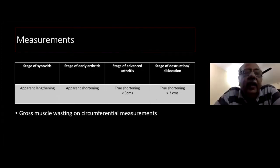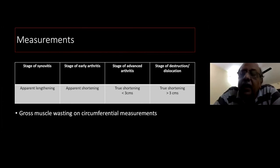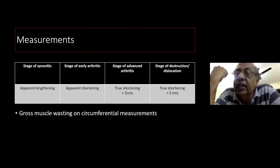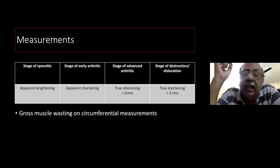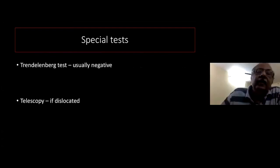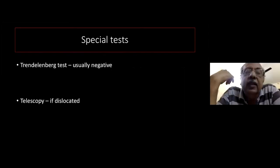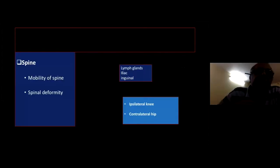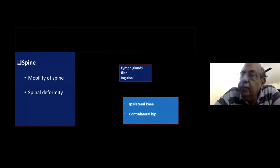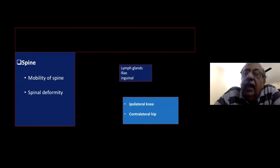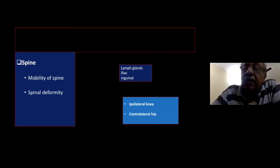Regarding measurements: in synovitis, you get apparent lengthening; in early arthritis, apparent shortening; in advanced arthritis, true shortening of less than three centimetres; and in destruction with dislocation, more than three centimetres shortening. Measure the circumference of the thigh — there will be gross wasting. Trendelenburg test is usually negative due to fixed deformities but may be positive in a late unstable hip. The telescoping test is positive only if the hip is dislocated. Always examine the spine, lymph glands, and both ipsilateral and contralateral limbs.